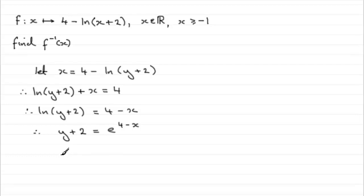So if I now subtract 2 from both sides, I'm going to have y as a subject. y equals e to the power of 4 minus x and then minus 2.